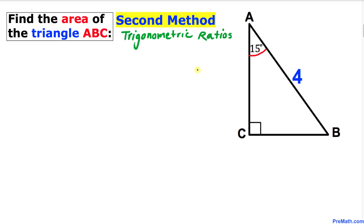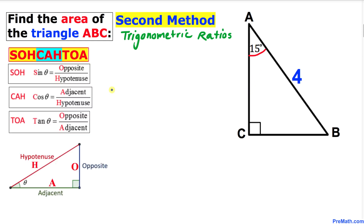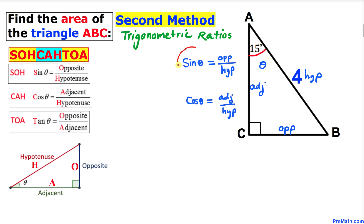Here is our second method. We will be using trigonometric ratios to find the area of triangle ABC, using the SOH CAH TOA chart. SOH CAH TOA stands for sine, cosine, and tangent. If we call the 15-degree angle theta, the opposite side is BC, the adjacent side is AC, and AB is the hypotenuse. So sine theta equals opposite over hypotenuse, and cosine theta equals adjacent over hypotenuse.